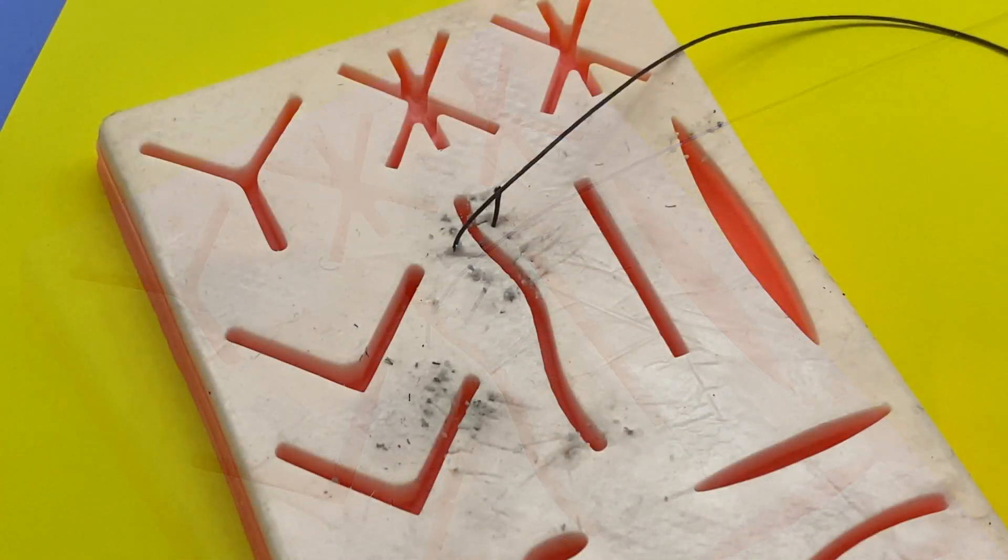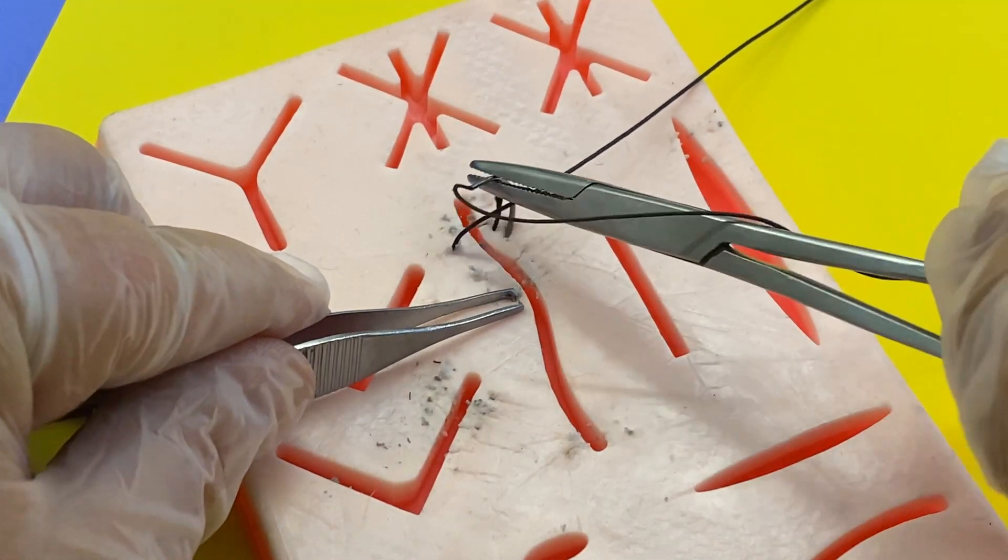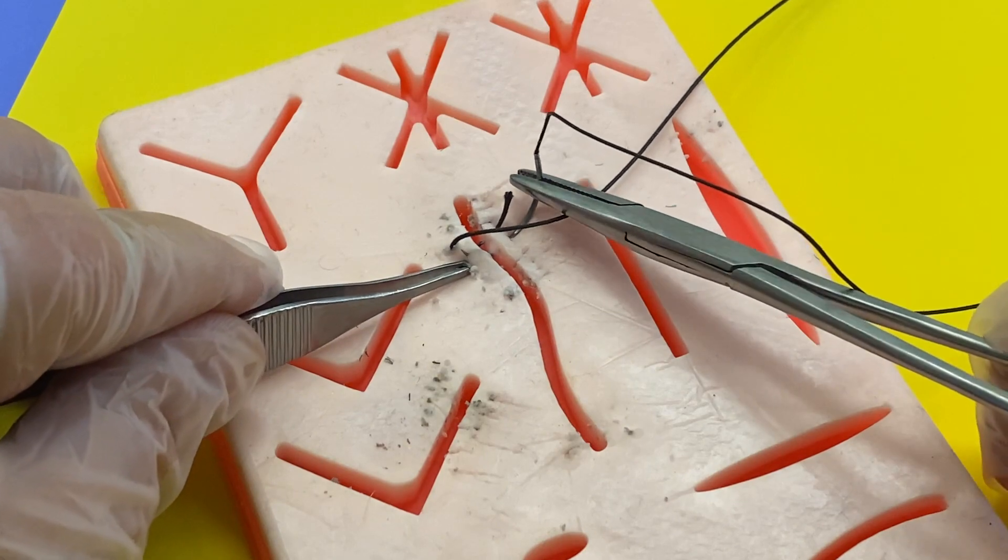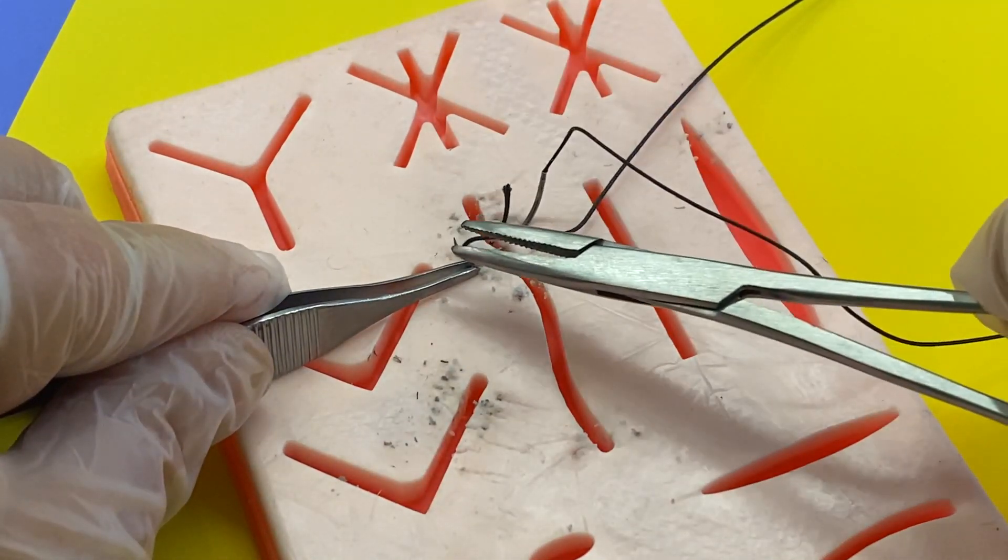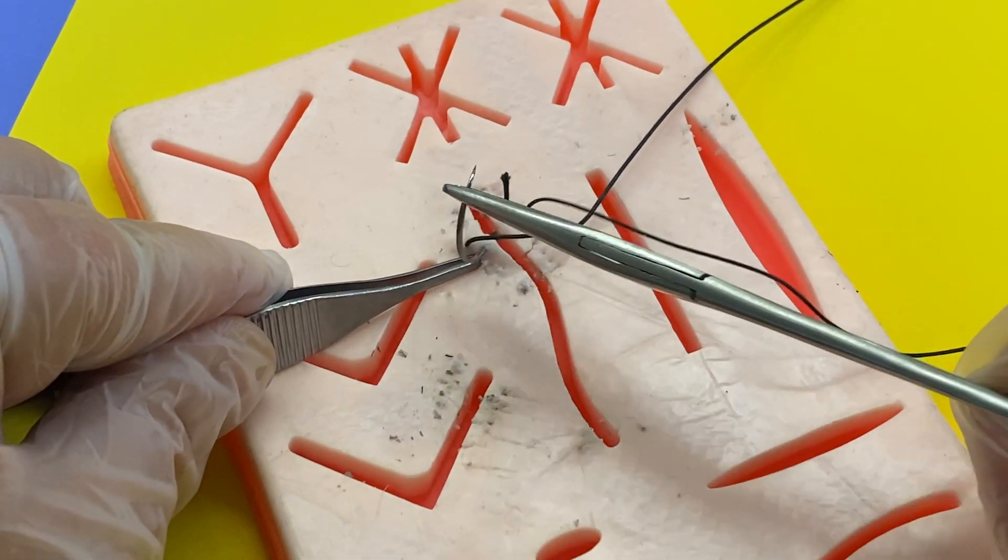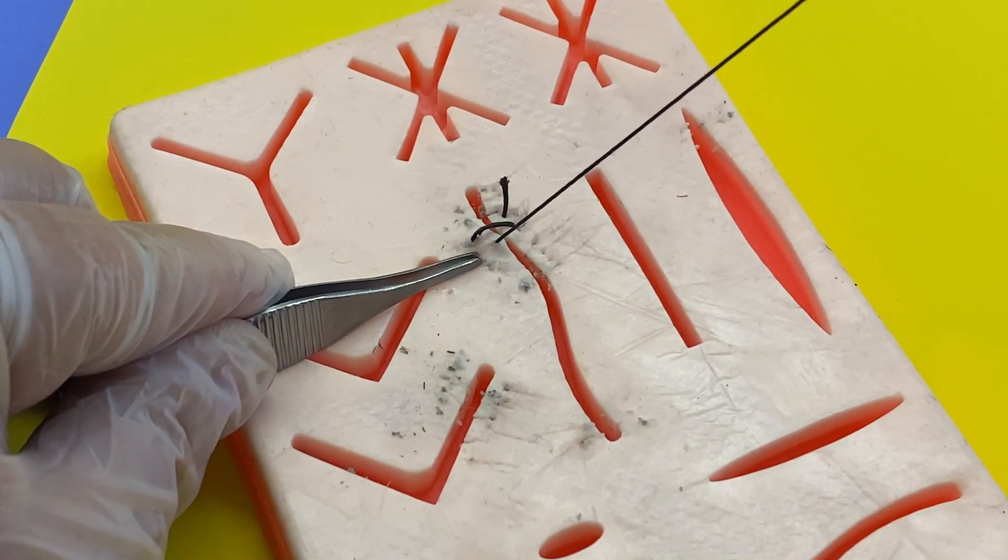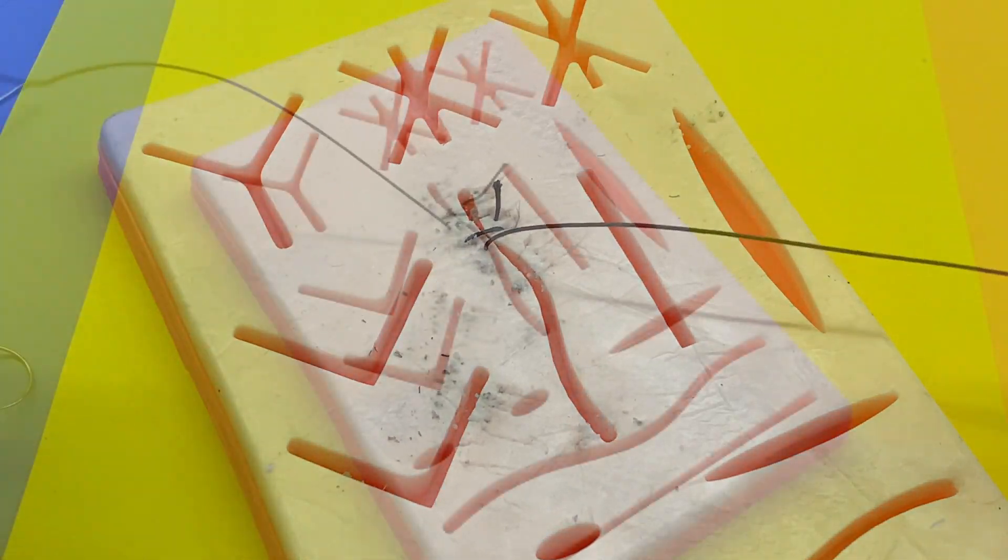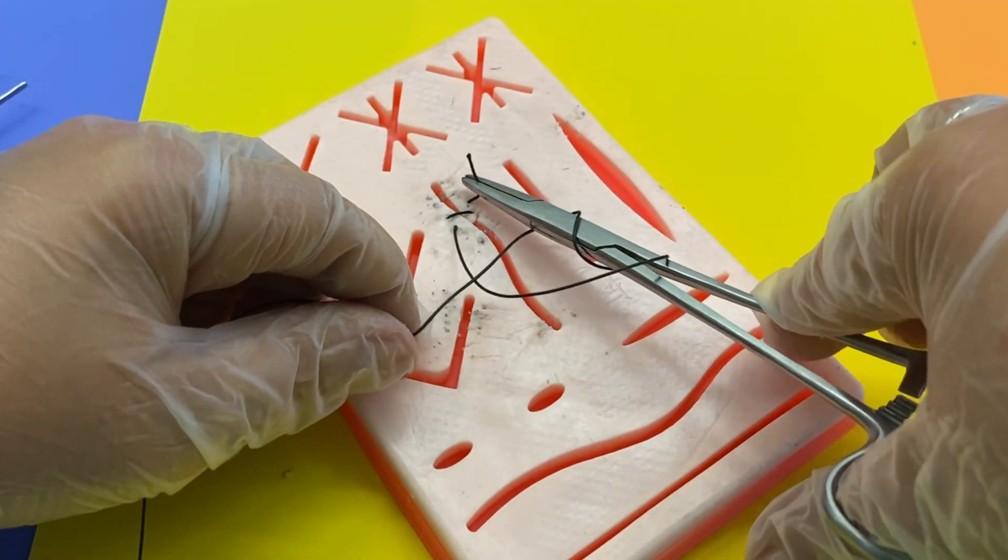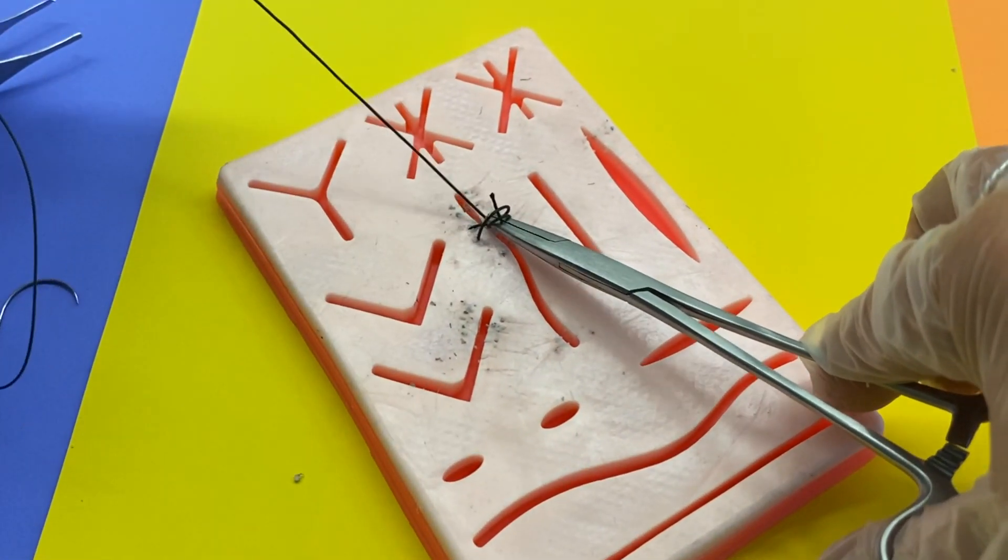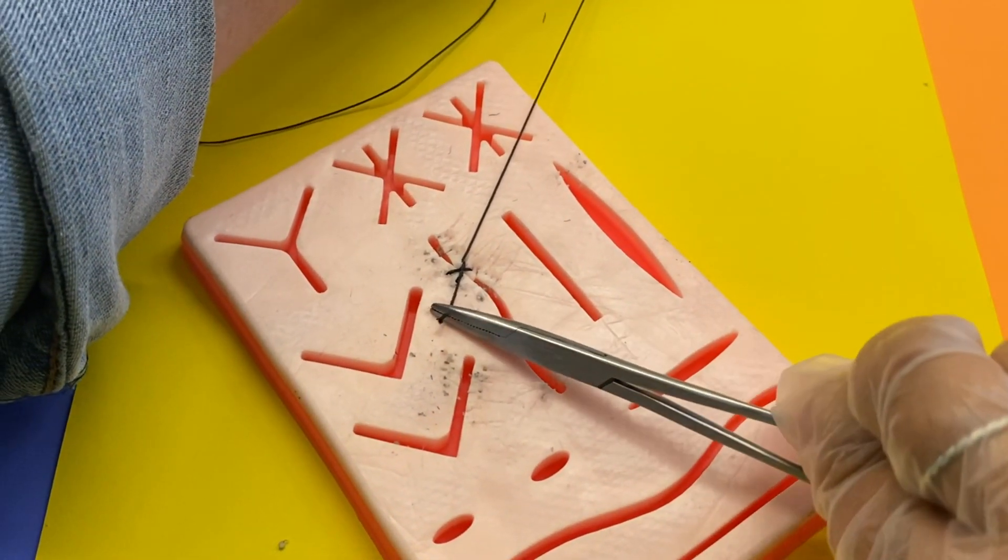Then you're going to put the needle driver through again, doing the same thing you did before. Then you're going to do your loop one, loop two, grab the end of the thread and pull through.